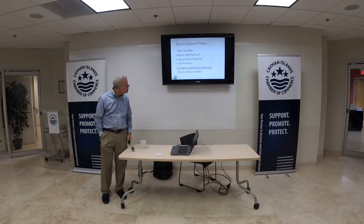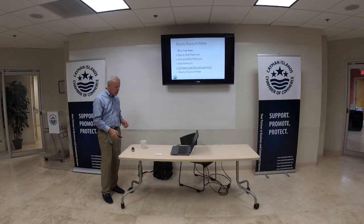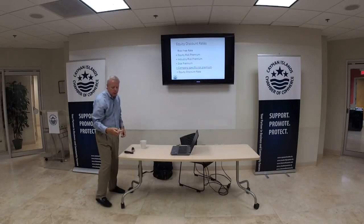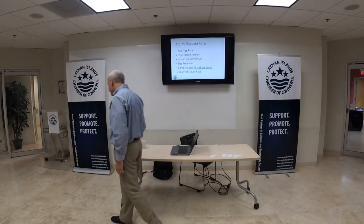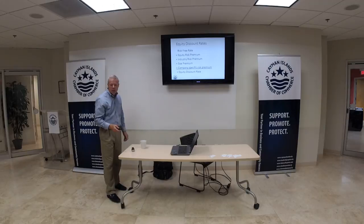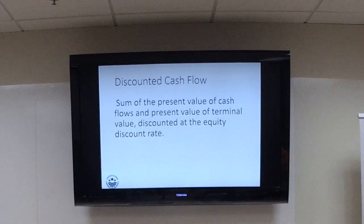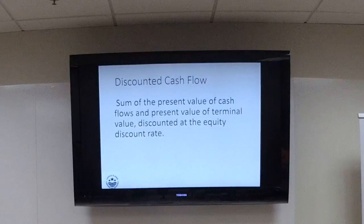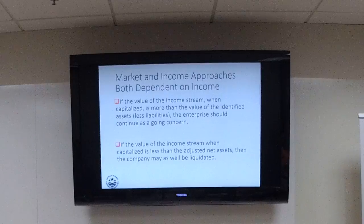We're past time, but I'll try to get through a few more slides. If you have to go, I understand — I have cards here, and if you want the slides or have questions, send me an email. Discounted cash flow is the sum of the present value of cash flows plus the present value of the terminal value at the end of the period, discounted at the equity discount rate. Both the market and income approaches depend on income — because the multiples in the market approach are on income, just as you capitalize an income stream in the income approach.